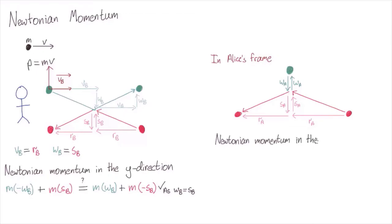Let's look at Newtonian momentum conservation in the y-direction. Before the collision, the green ball is moving downwards with speed wA, and the pink ball is coming upwards with speed sA.